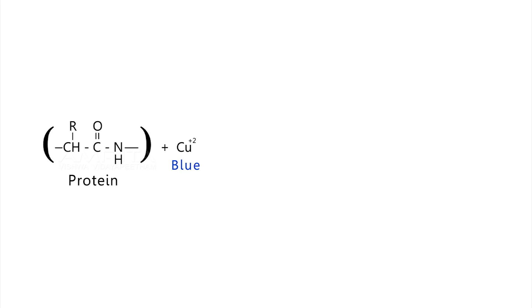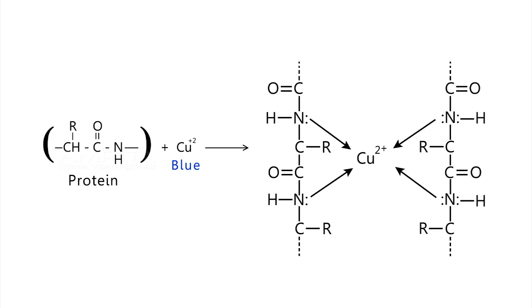It uses a Biuret reaction in which copper, in presence of a base, reacts with the peptide bond under alkaline conditions resulting in the reduction of cupric ions to cuprous ions.